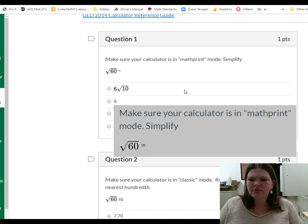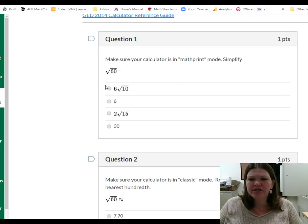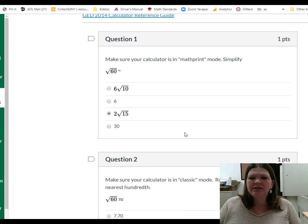So let's go back to our quiz here. The answer that I should have selected here for number 1 is 2 square root of 15. Awesome.